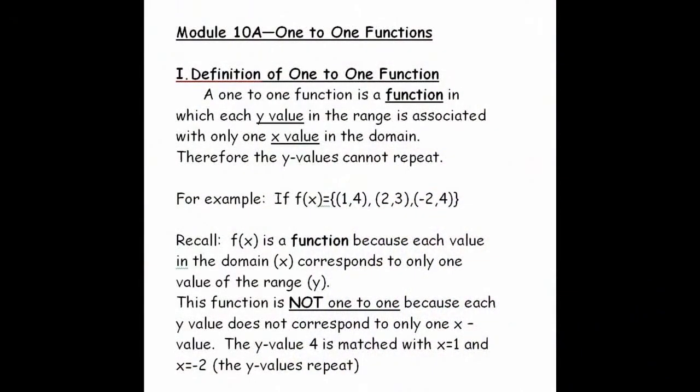In module 10 we have to define some vocabulary words. The first word is what the word function means. A one-to-one function is a function in which each y value in the range is associated with only one x value in the domain. The key word is function. Remember we talked about it with the dating analogy — a function meant every girl can only date one boy. In math, the girls are the x's like the x chromosome, and the boys are the y's like the y chromosome. So to be a function, every x value can only be paired with one y value.